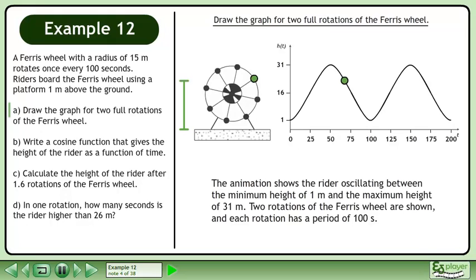The animation shows the rider oscillating between the minimum height of 1 meter and the maximum height of 31 meters. Two rotations of the Ferris wheel are shown, and each rotation has a period of 100 seconds.